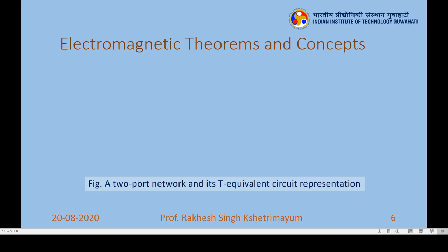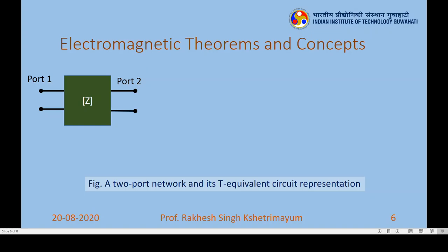We can also explain this reciprocity theorem in terms of circuit theory. To do that, we need to understand what a two-port network is and its equivalent circuit representation. A two-port network has two ports: port 1 (input port) and port 2 (output port). The device Z has a matrix representation — it can be in terms of scattering matrix, Y matrix, or Z matrix (impedance matrix), which is what we are interested in. The T equivalent circuit representation can be derived from this.